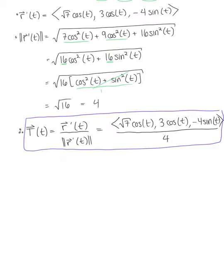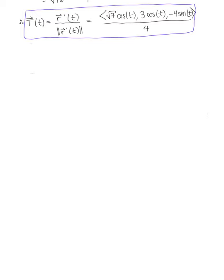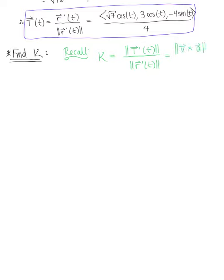We'll now use this to find the curvature. Recalling the formula, the curvature can be defined one of two ways: the magnitude of the derivative of the unit tangent vector over the magnitude of the tangent vector, or the magnitude of the cross product of the velocity vector with the acceleration vector, all over the magnitude of the velocity vector cubed. Let's use the first formula here.